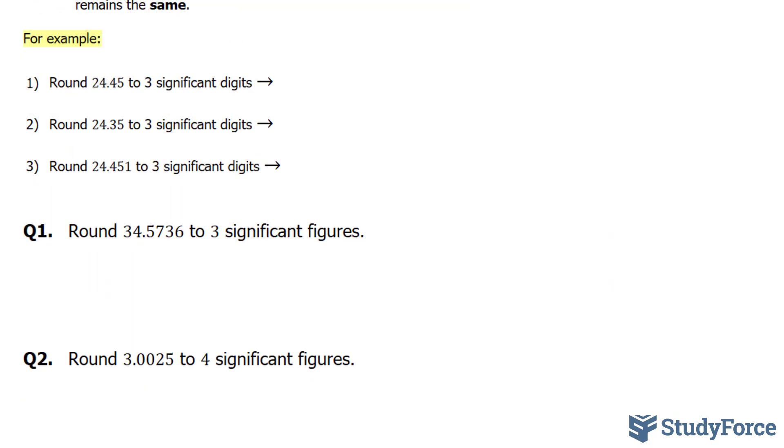Here's what I mean. Let's take, for example, the number 24.45, and we want to round this to three significant figures. So everything after this second 4 will go away.